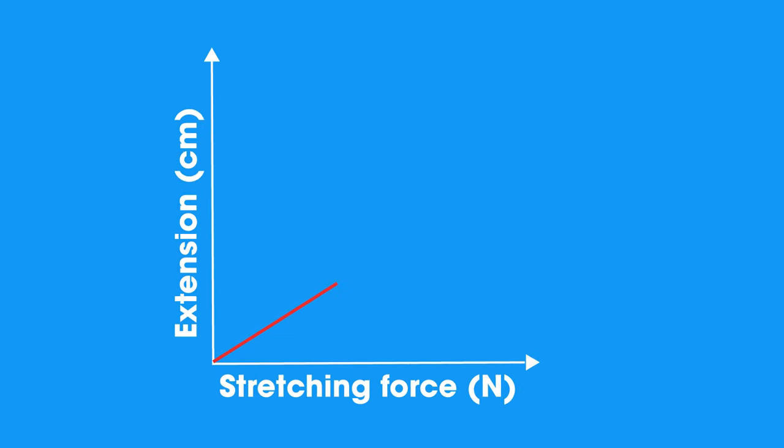So to recap, the straight line shows that the extension is directly proportional to the load on the spring. That means the extension will double if the force doubles, it will treble if the force trebles, and so on. This relationship is known as Hooke's law. There is a linear relationship between force and extension.